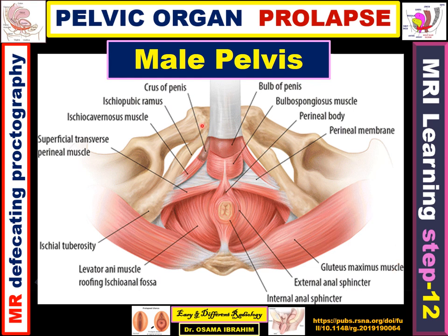I like to start with the anatomy of the male pelvis. As we see here, this is the anus surrounded by the internal and external anal sphincter. Between the ischial tuberosity and the anus, there are the ischio-anal and ischio-rectal fossae, which are roofed by the levator ani muscle on both sides. The most posterior structure is the gluteus maximus muscle. This structure represents the ischiocavernosus muscle connecting to the corpora of the penis, and this is the bulbus of the penis and the bulbospongiosus muscle.